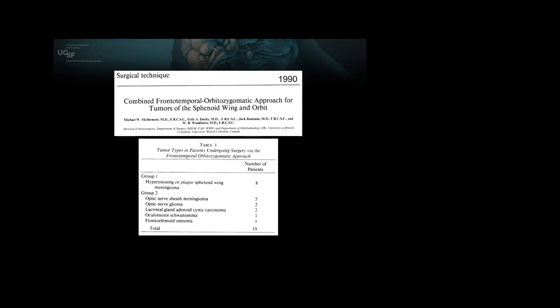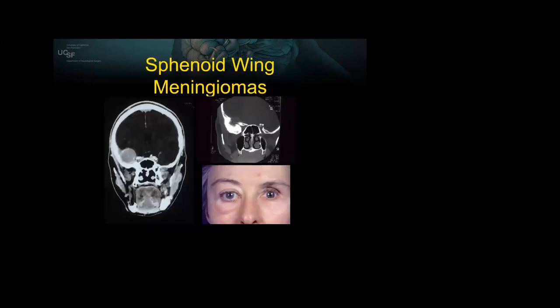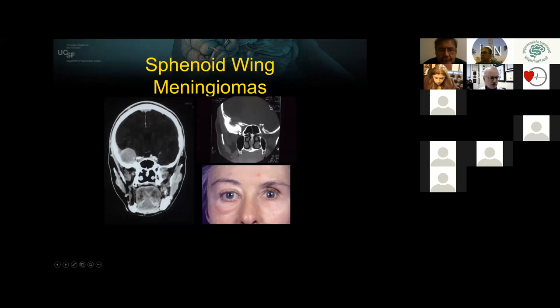I originally trained in Canada in Vancouver and had the privilege of working with outstanding orbital surgeon Dr. Jack Rootman. He wrote 'Surgery of the Orbit' and 'Tumors of the Orbit,' had his own instrumentation, and we published a paper back in 1990 on 19 patients with optic nerve sheath meningiomas or hyperostosing sphenoid wing meningiomas in eight patients, initially describing the technique. The typical presentation is painless proptosis in a female with edema of the lower lid and relatively small intradural component.